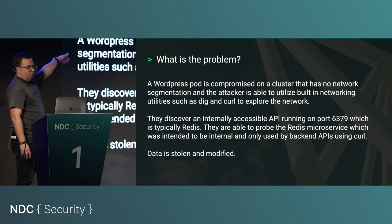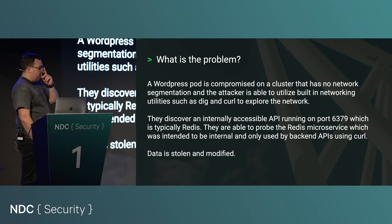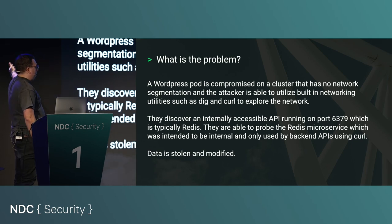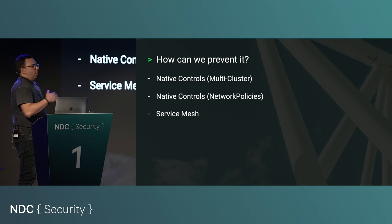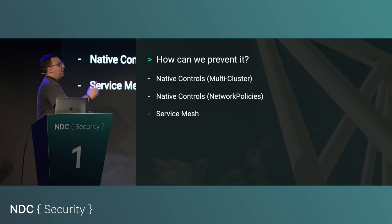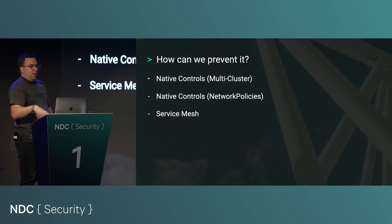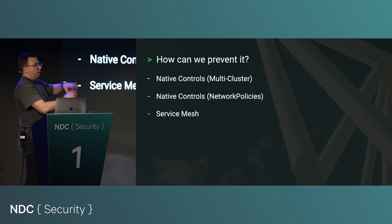A prime example: a WordPress pod gets compromised. You scan for open ports, find 6379, recognize it's Redis, run curl requests — because you're running Ubuntu with curl installed — and data can be stolen, modified, put on the dark web. To prevent this: use multiple clusters — a dev cluster, a staging cluster, a production cluster. Yes, it's overhead, but it gives you cluster boundaries. All those policies running in staging and development should also run in production; standardization is key.